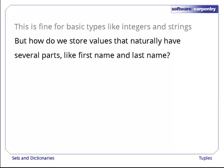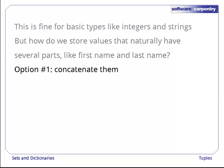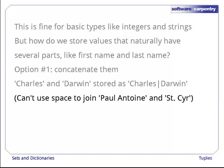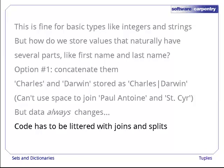This is fine for basic types like integers and strings, which are immutable. But what do we do with values that naturally have several parts, like people's names? There are several options. The first is to concatenate those values somehow — for example, if we want to store Charles and Darwin, we'd create the string 'Charles-bar-Darwin' and store that. We have to use a character like bar instead of something more natural like a space, because if we join 'Paul-Antoine' and 'St. Cyr' using a space, there would be three possible ways to split it apart again. Concatenating values is actually a pretty bad idea: we have to find a concatenator that can never come up in our data, and our code will wind up being littered with string joins and string splits, which will make it slower and harder to read.